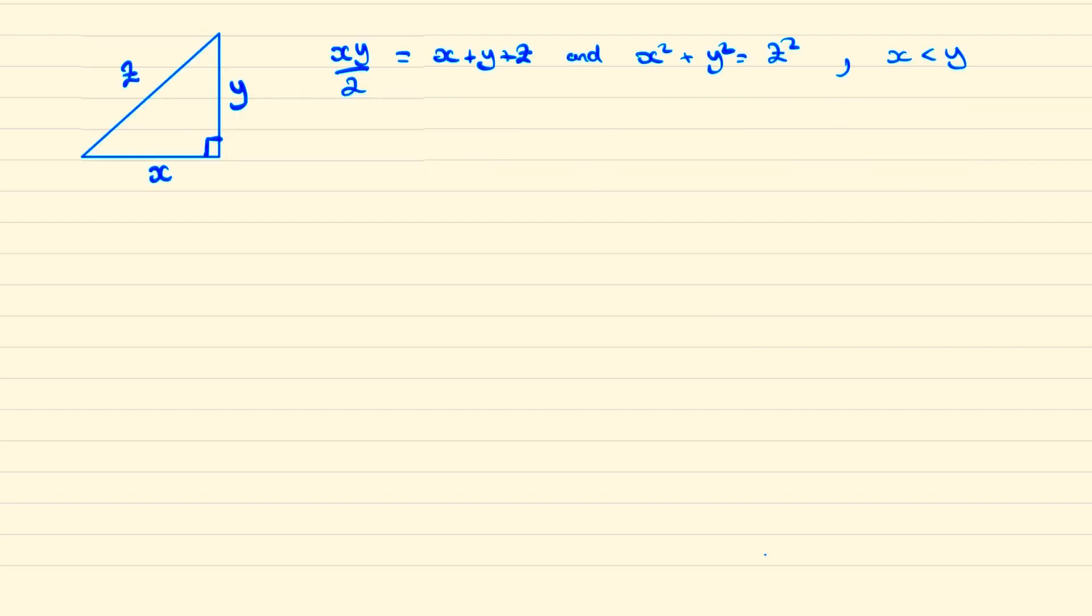We'll start by setting up the following equations so the area xy over 2 equals the perimeter x plus y plus z, and x squared plus y squared is z squared. We'll also note that since x and y are symmetrical in our equation we can say that x will be less than y.